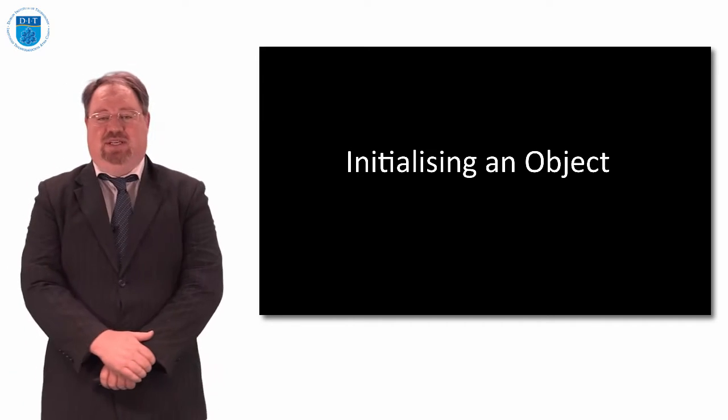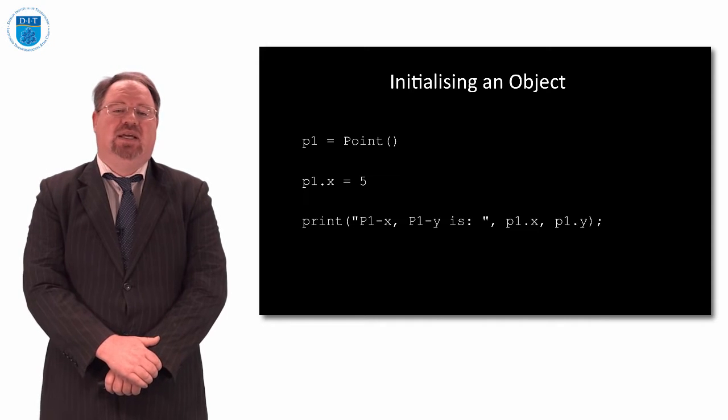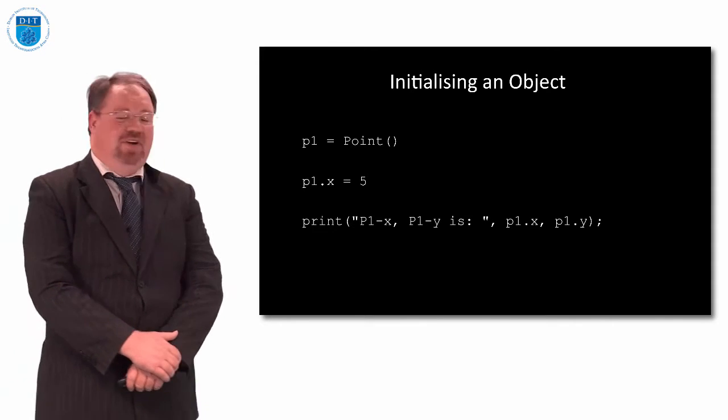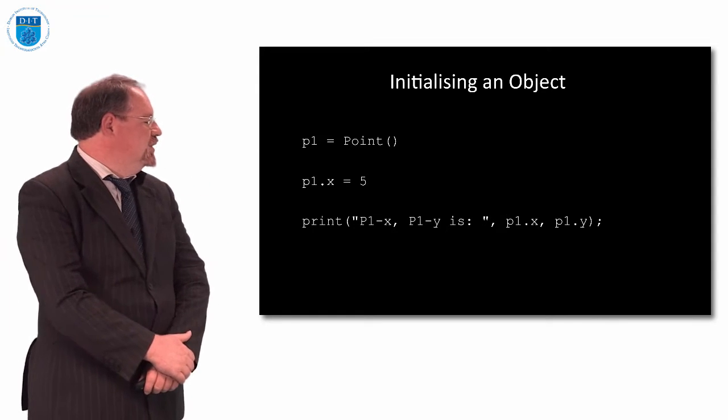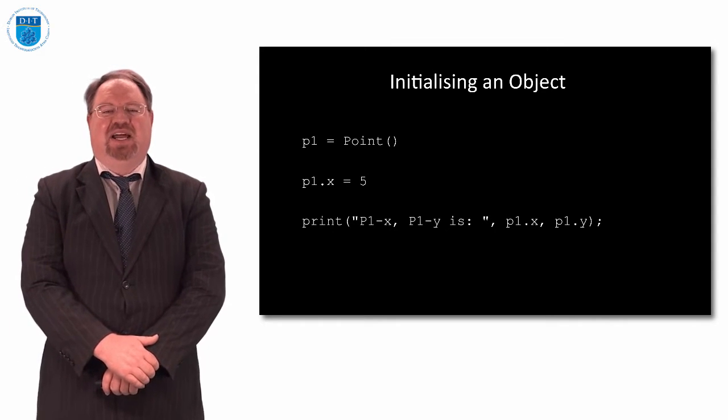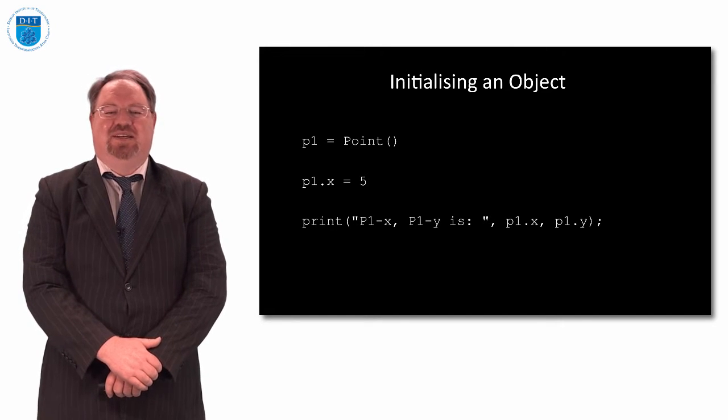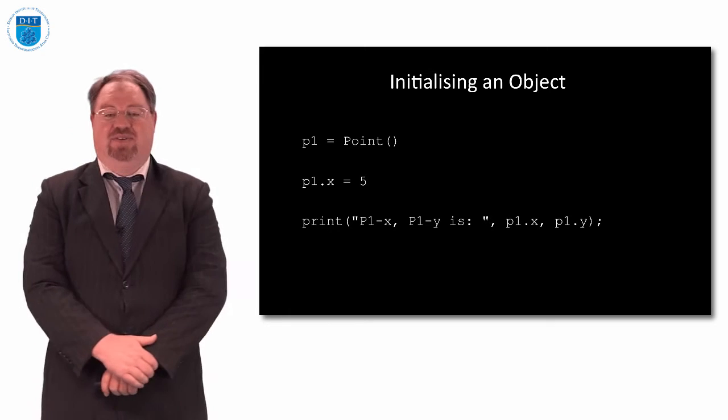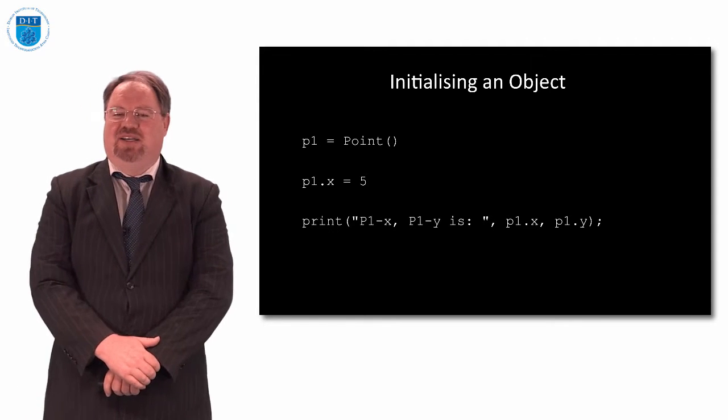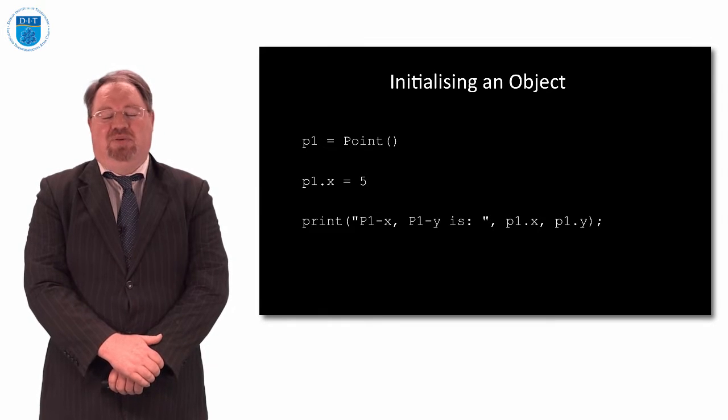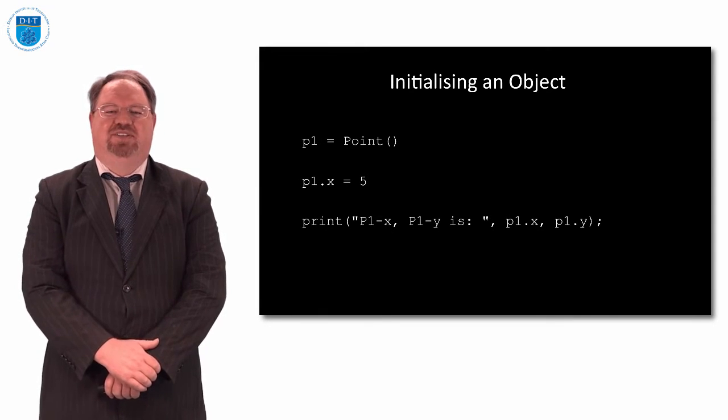So in terms of initializing an object, what do I mean by that? Well, let's think of the following case. Let's say I declared a variable of type point and called it p1, or more technically I instantiated an object called p1, and then I said p1.x is 5, and then I printed out p1.x and p1.y. You will notice I've forgotten to do something here.